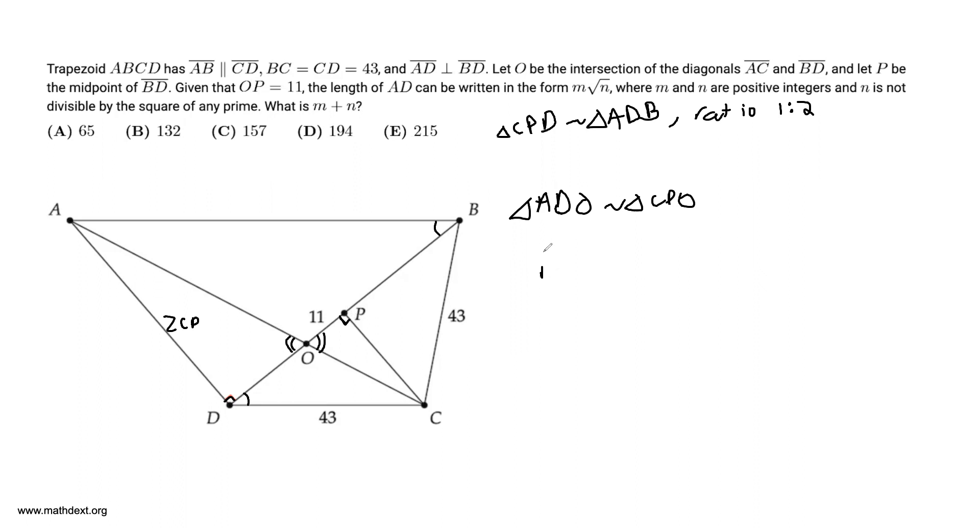So we have PO over DO is equal to CP over AD, which is our one half again. But PO is 11, so DO must be 22.